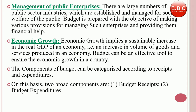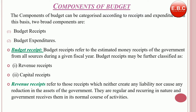Next, we have the components of budget, which are categorized into two categories: budget receipts and budget expenditures. Budget receipts refer to the estimated money receipts of the government from all sources during a fiscal year. They are of two types: revenue receipts and capital receipts. Revenue receipts are the sources of income which support the main component of budget. They refer to those receipts which neither create any liability nor cause any reduction in the assets of the government. They are regular and recurring in nature and the government receives them in its normal course of activities.